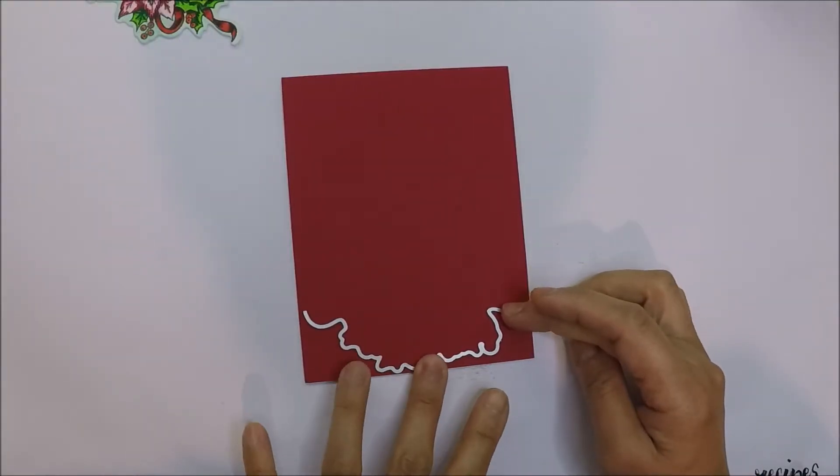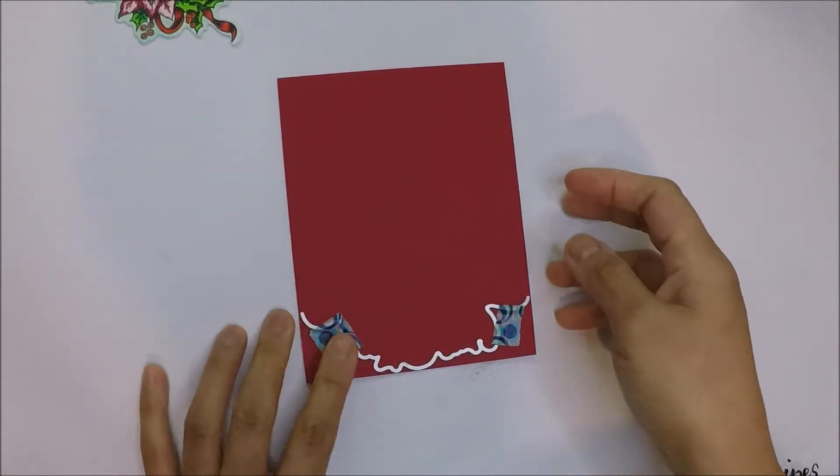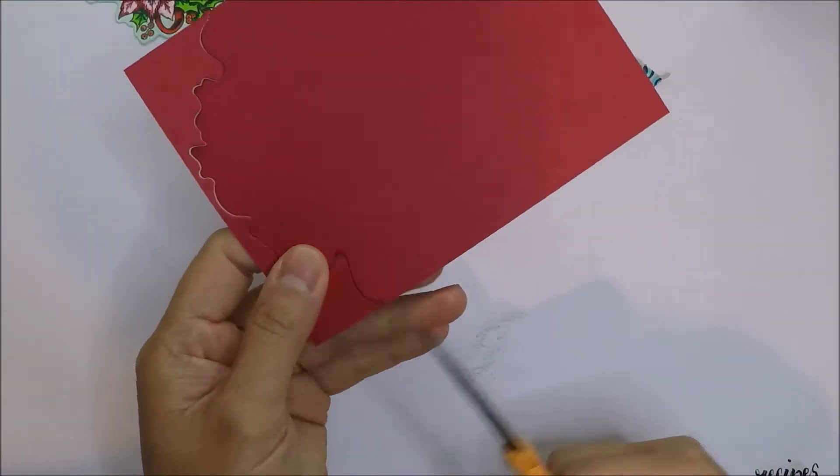I have my red card base here and I will position the die on the lower part of the card base. Tape that down and die-cut it with my die-cutting machine.